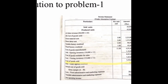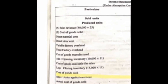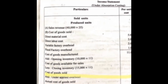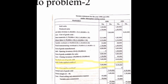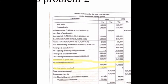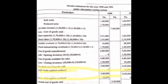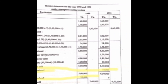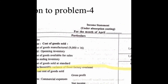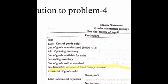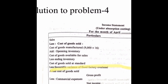Here is the solution for the problems — what will be the treatment of over applied or under applied fixed factory overhead. In the first problem, there is an under applied of Taka 5,000, so this amount will be added to cost of goods sold. In the second problem, in the first year fixed factory overhead was over applied, so that amount should be deducted from standard cost of goods sold. But in the second year there was fixed factory overhead under applied, so that will be added to standard cost of goods sold. In the fourth problem, there was fixed factory overhead over applied of Taka 6,000, which is also to be deducted from standard cost of goods sold.